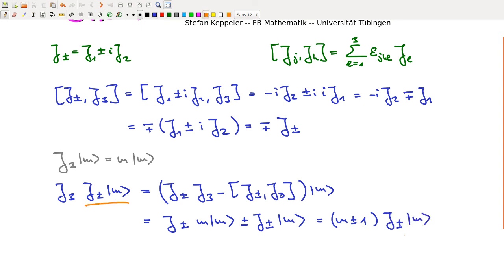So we see J plus minus applied to M is either also an eigenvector of J3 with eigenvalue M plus or minus 1. Or it's 0. That could of course also happen.